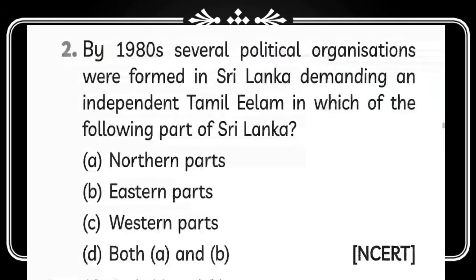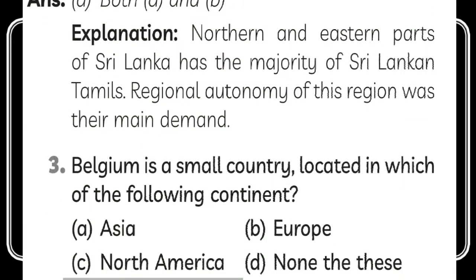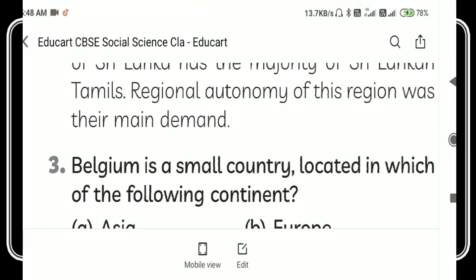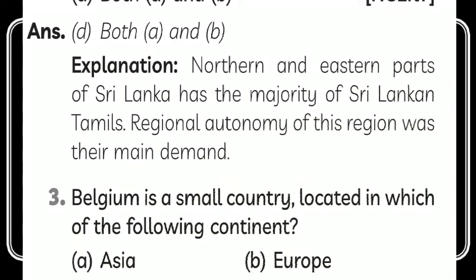The next question is: by 1980 several political organizations were formed in Sri Lanka demanding an independent Tamil Eelam — in which parts of Sri Lanka? The answer is both A and B, meaning the northern and eastern parts of Sri Lanka. The northern and eastern parts of Sri Lanka have a majority of Sri Lankan Tamils, and regional autonomy of this region was their main demand.